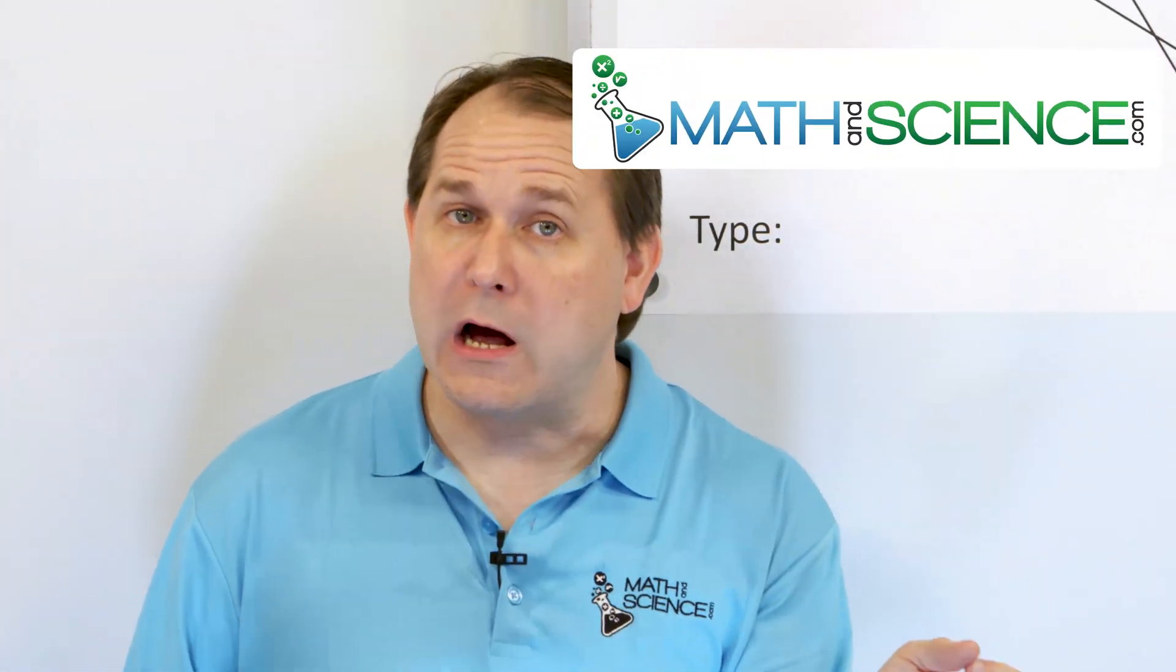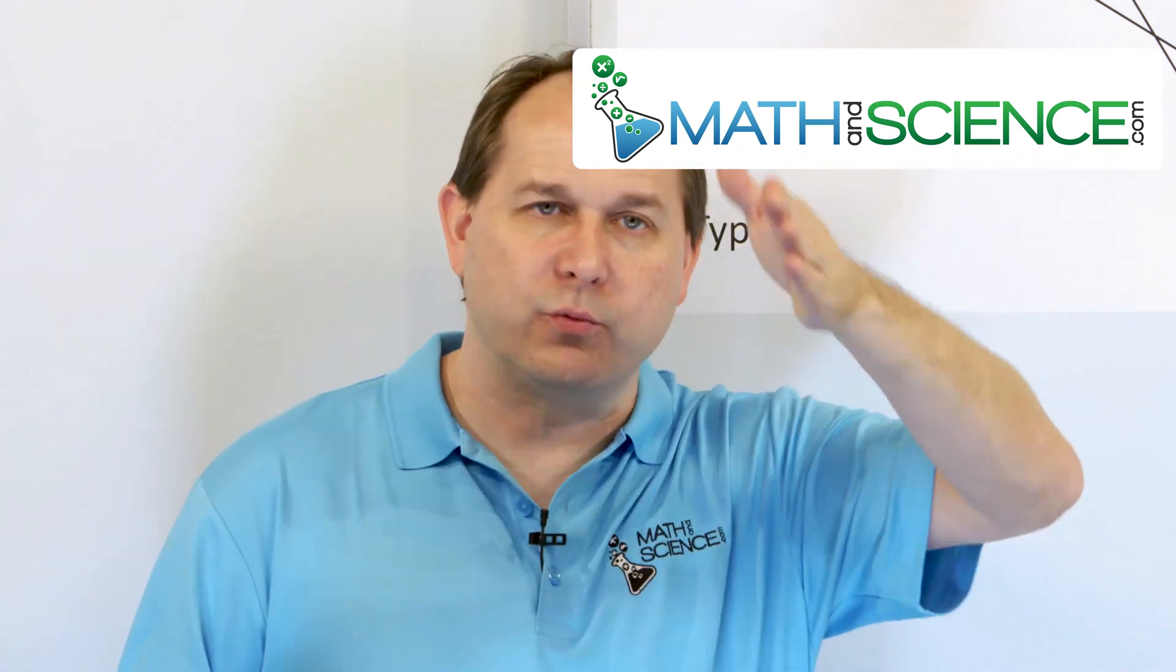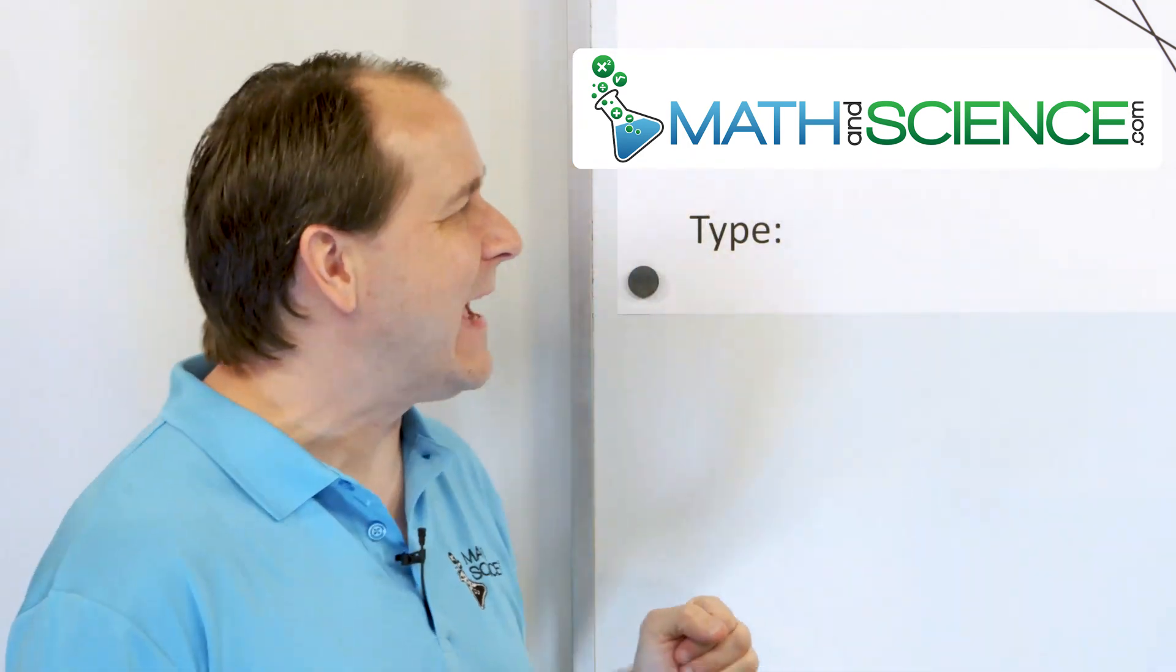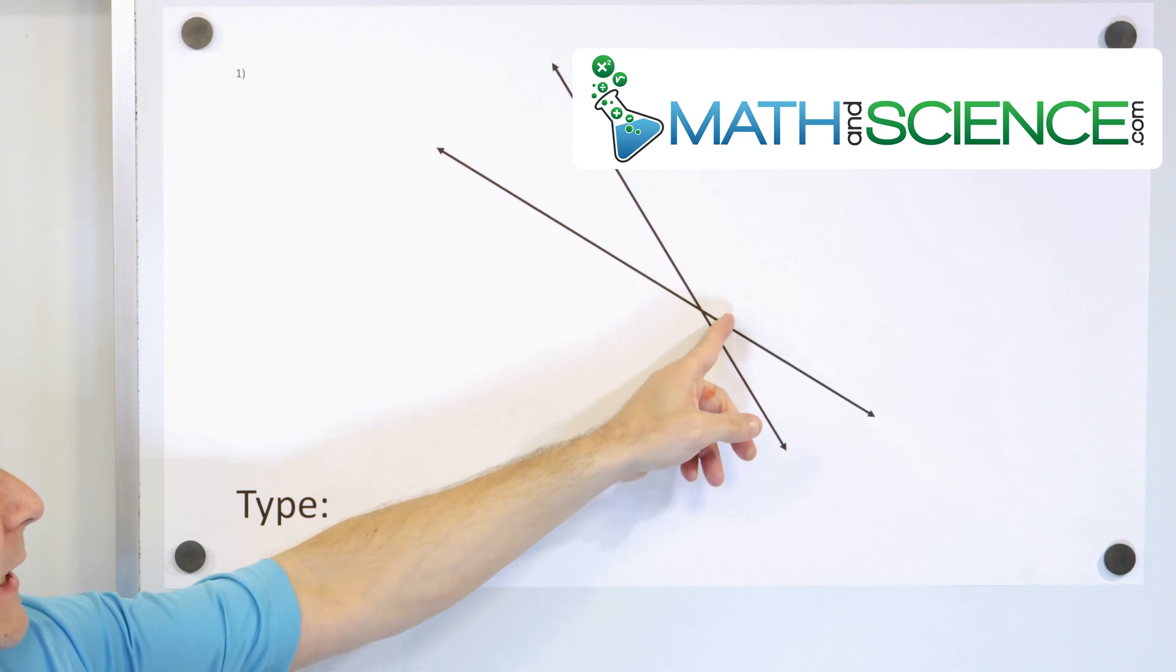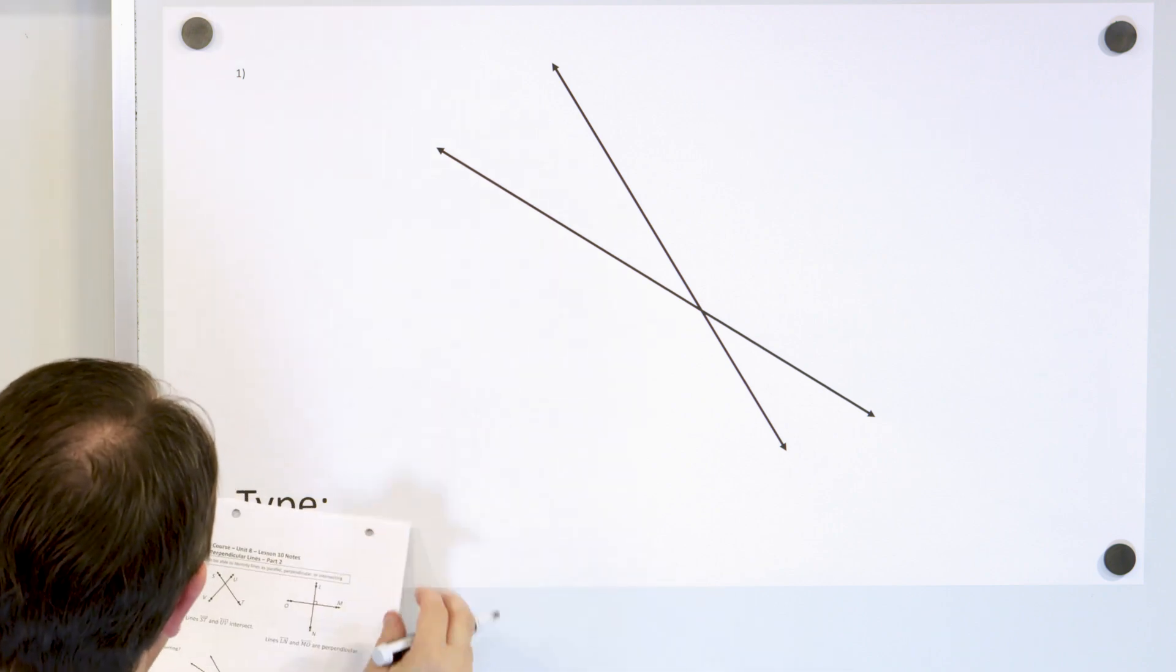Perpendicular lines are lines that cross, but they cross at 90 degrees, exactly up and down where one slices through the other. This has no 90 degree marking, no right angle, so this is not a pair of perpendicular lines. These lines are just called intersecting lines.